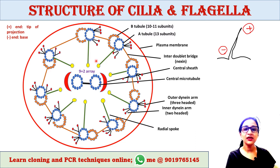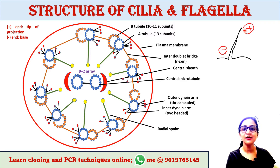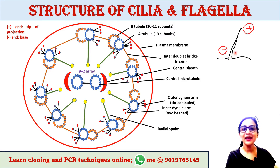All microtubules of the axoneme have the same polarity. The plus ends are at the tip of the projection, while the minus ends are found at the base, which is located at the plasma membrane.